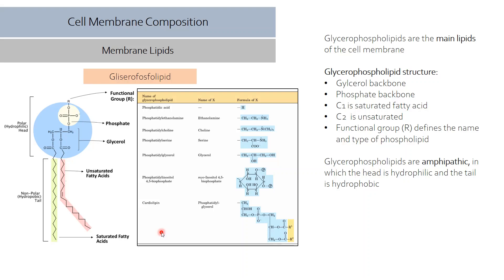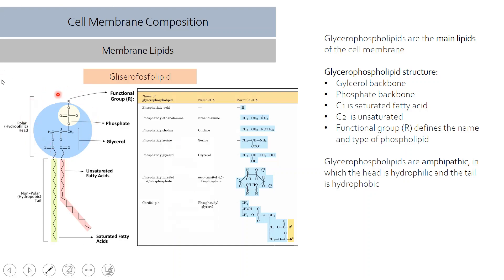An important characteristic of glycerophospholipids is that they are amphipathic — composed of both a hydrophobic and a hydrophilic structure. The head of the glycerophospholipid is hydrophilic and loves water, while the fatty acid tail is hydrophobic and does not like water. Having both preferences in one molecule is what we call amphipathic.